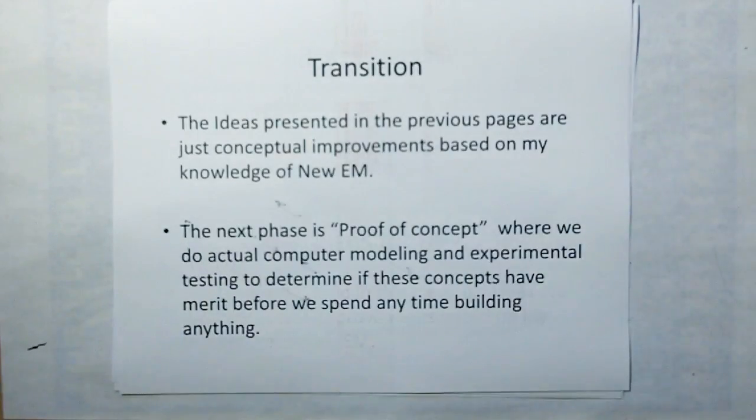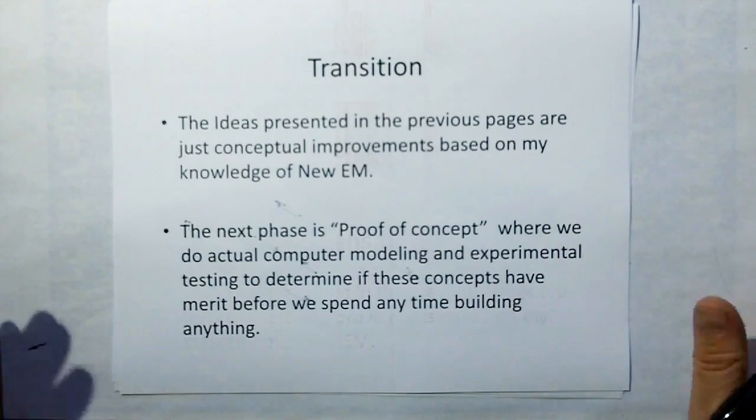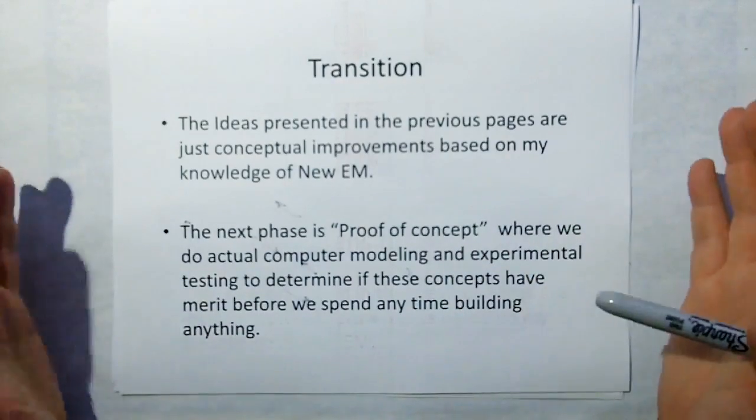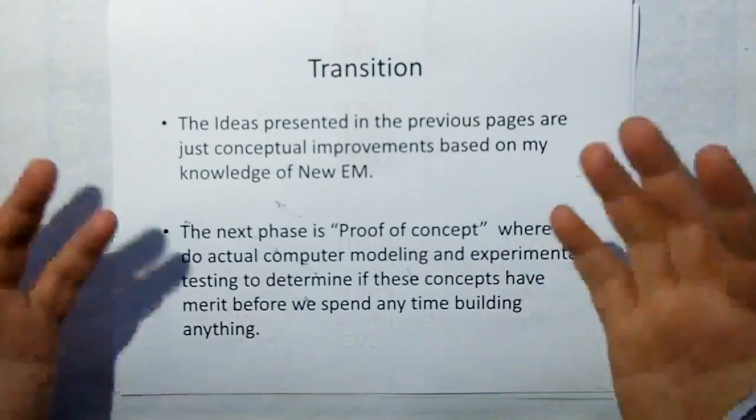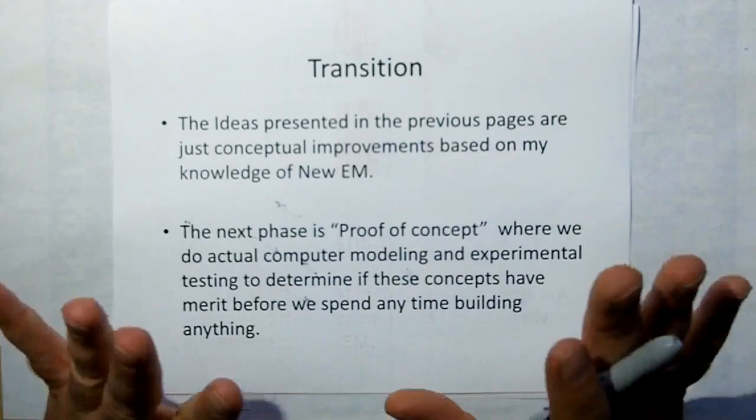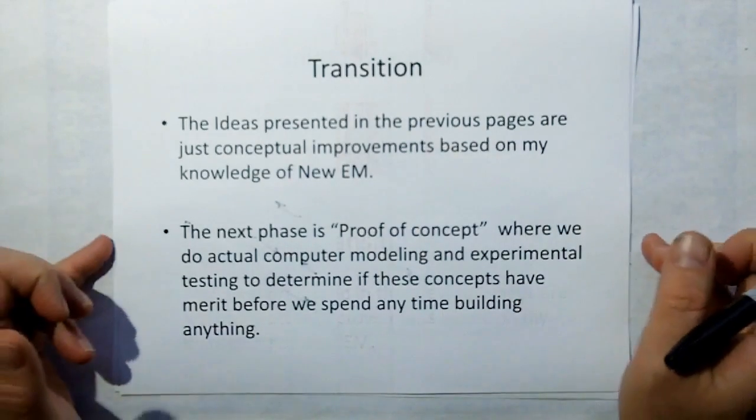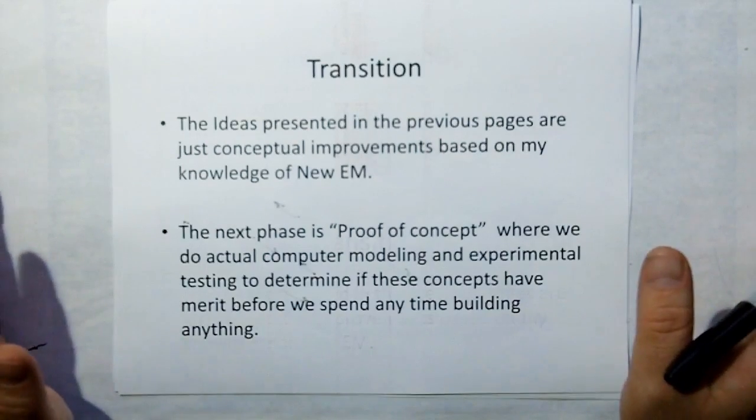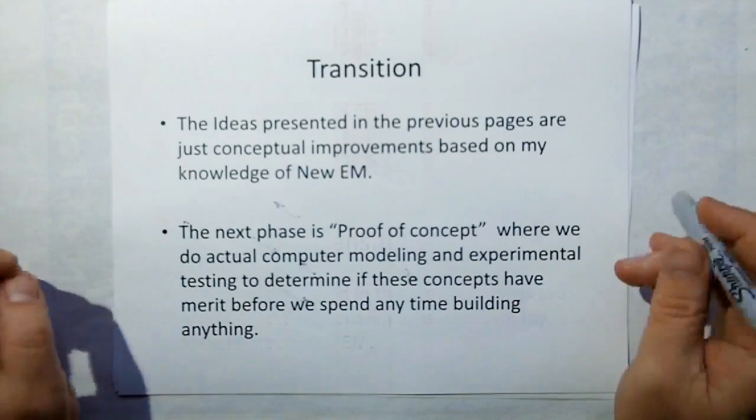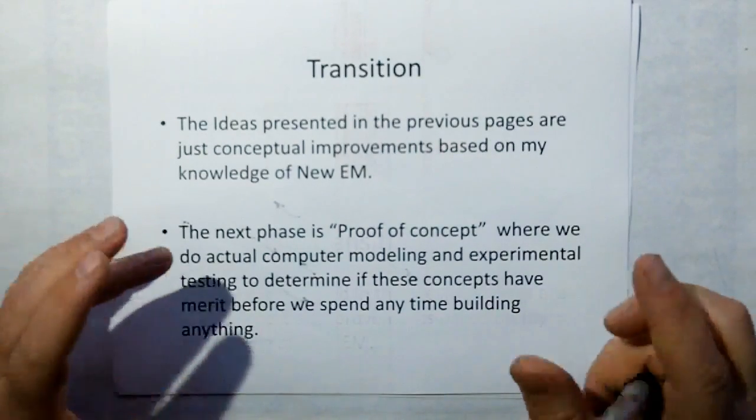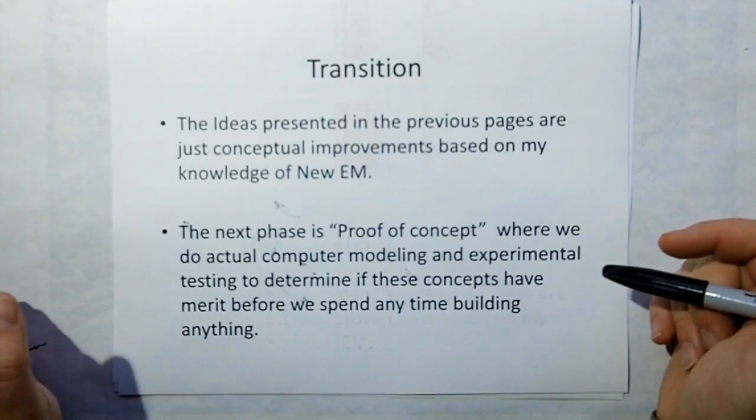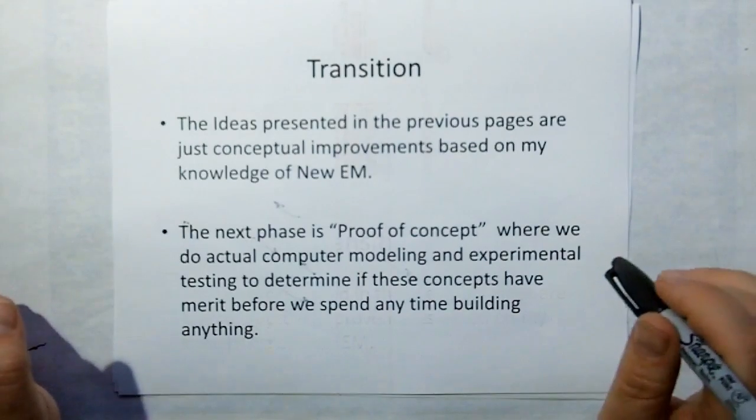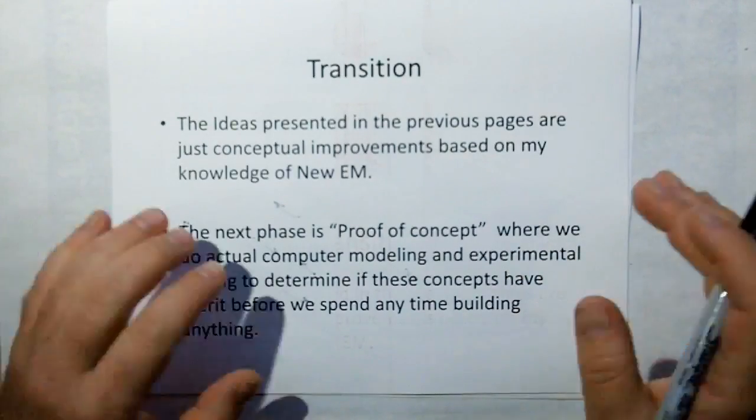There's lots of advantages to knowing the new electromagnetism, the way it explains to you what's actually going on so you can optimize the design. But now just to be clear here, the ideas presented on the previous pages are just conceptual based on my knowledge of new electromagnetism. The next phase is proof of concept where we do actual computer modeling followed by experimental testing to determine if these concepts have merit before spending any time building anything.